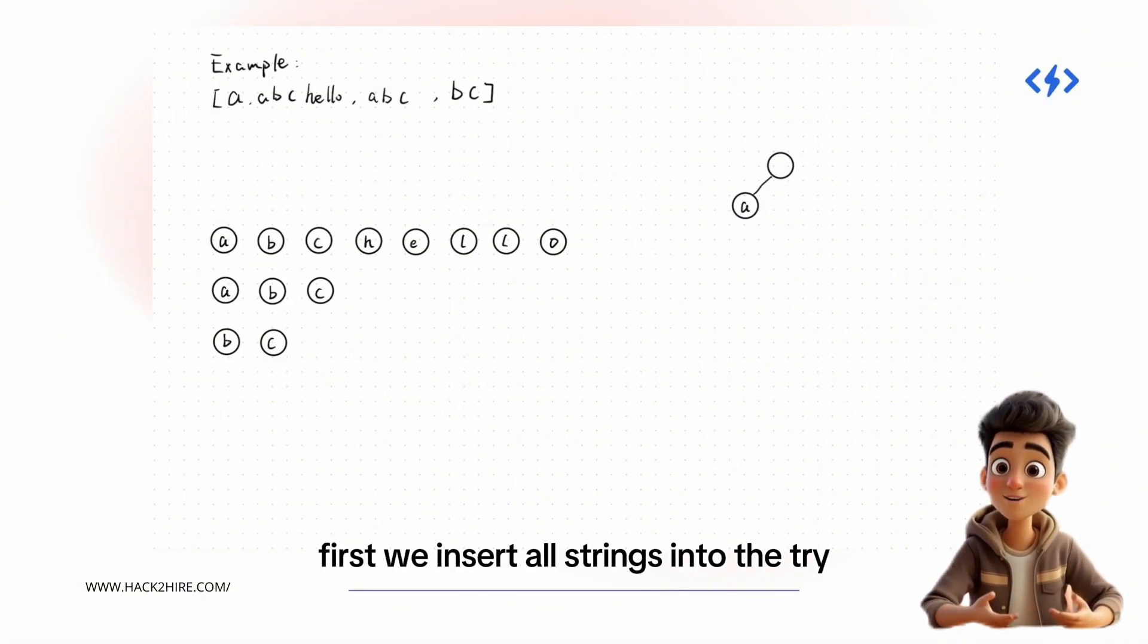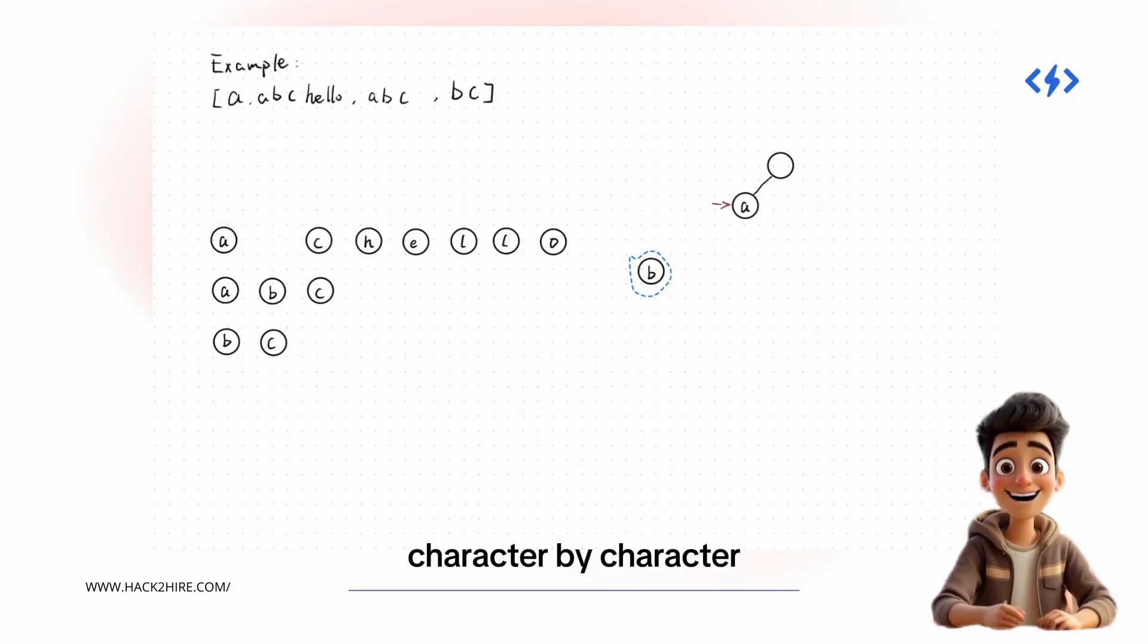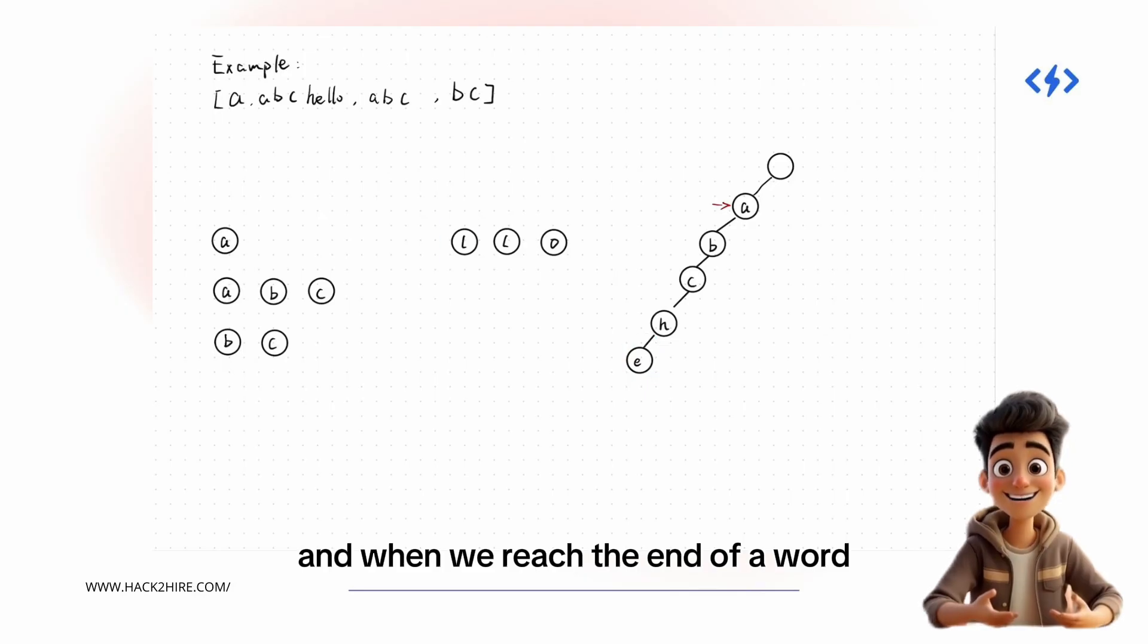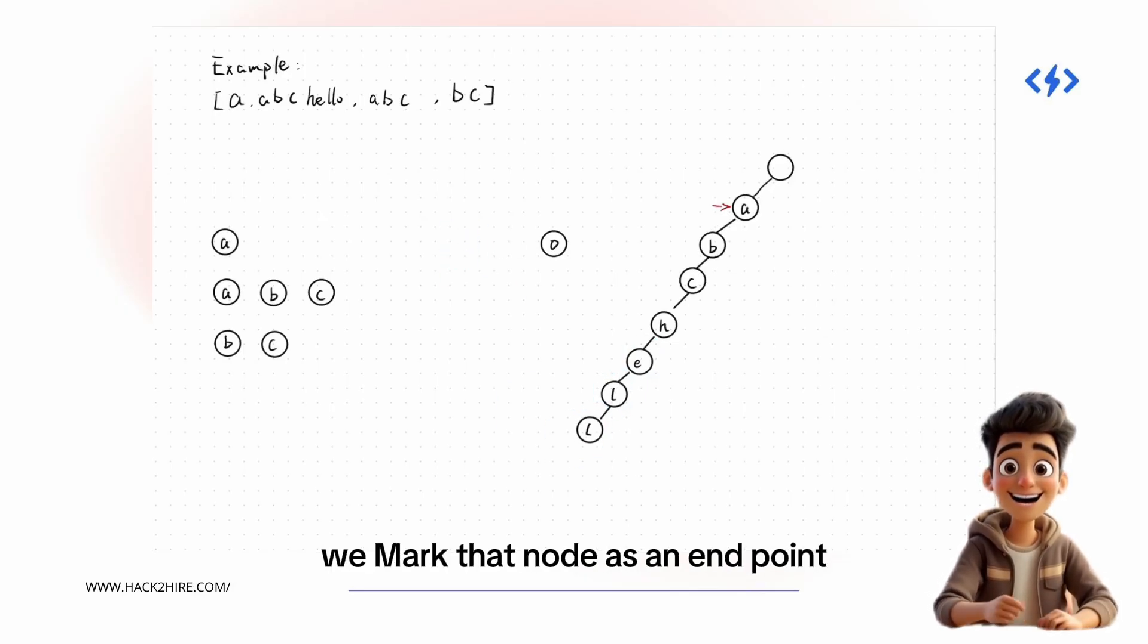First, we insert all strings into the trie character by character. Each node keeps track of children, and when we reach the end of a word, we mark that node as an endpoint.